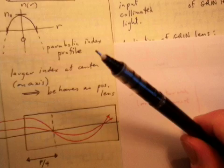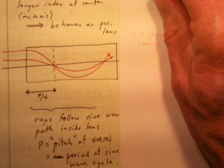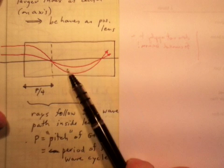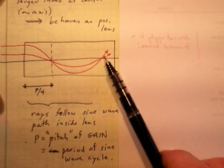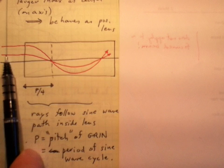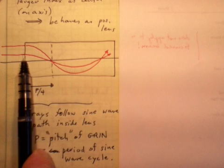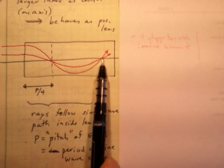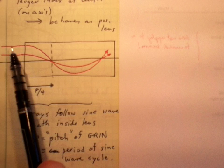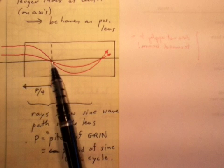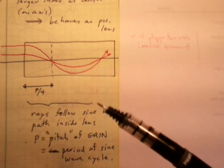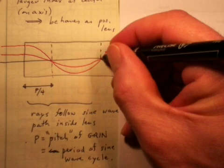With this parabolic index profile, the beam actually follows a sinusoidal path through this thing. It goes around following a sine wave. Another beam that hits it parallel to the axis but closer to the axis will also undergo a sine wave. And again with that parabolic profile, both of these parallel rays will be brought to a focus right here. And they will be brought to a focus over and over again at these points in this GRIN lens.